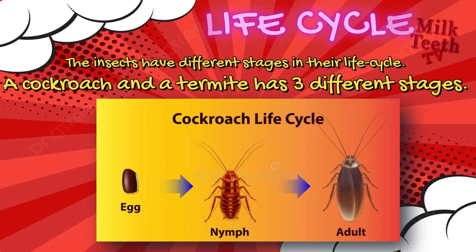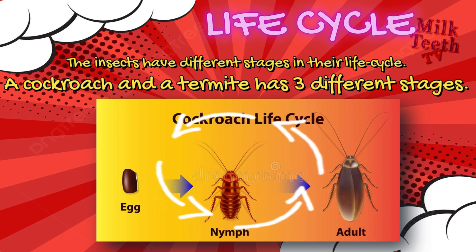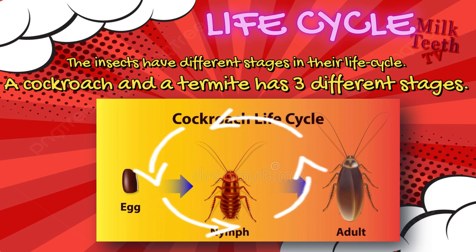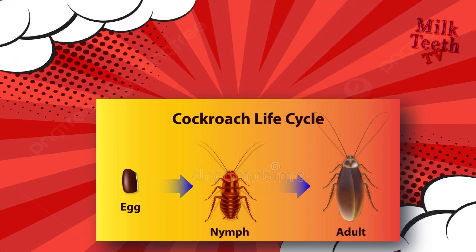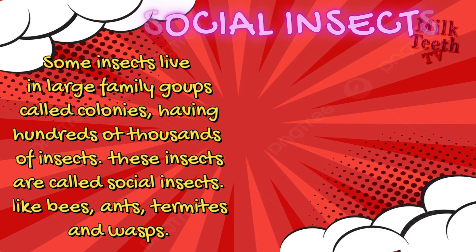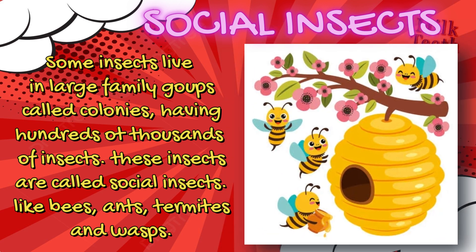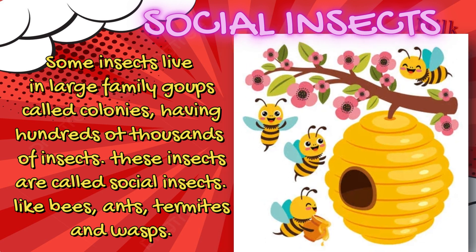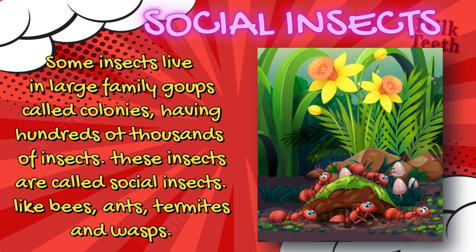A cockroach and a termite have three different stages in their lives. Some insects live in large family groups called colonies, having hundreds of thousands of insects. These insects are called social insects — for example, bees, ants, termites, and wasps.